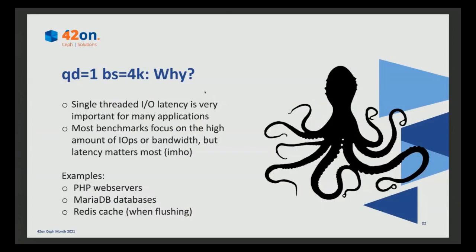What we see with benchmarks is people focus on high amounts of bandwidth or large amounts of IOPS, but they simply go multi-threaded with a high Q-depth and then they can say we reached a million IOPS with Ceph, or two million IOPS. But in the end, if you look at the latency of a single I/O, it could be pretty high. For example, a PHP web server, a MariaDB database, or a Redis cache when flushing to disk — they're all doing single-threaded I/O, and the latency of that single-threaded I/O starts to matter. That's what you notice: it's how snappy applications feel.